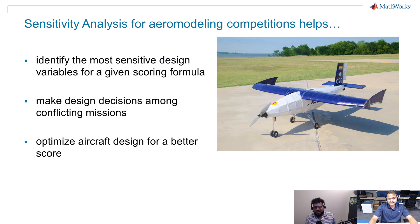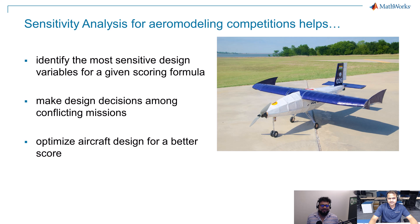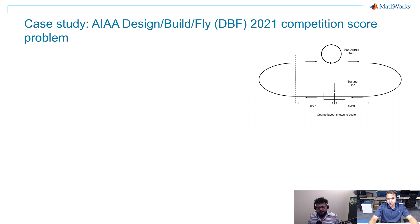I can see how this is important for a complex system like an aircraft where everything is coupled together. If you increase the size of your wing, there are going to be corresponding changes in fuselage length, for example, just to make sure your aircraft is stable. Having a way to mathematically check how a change in one design variable affects another really helps you get started. So we are going to discuss this with the case study of the AIAA Design Build Fly competition of 2021.